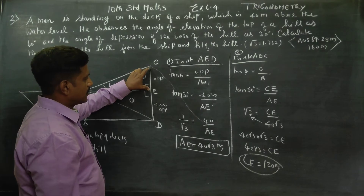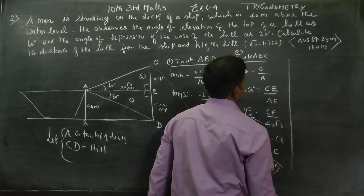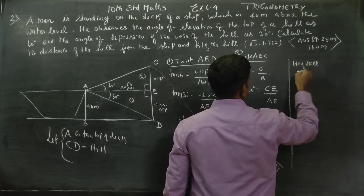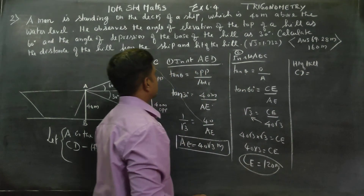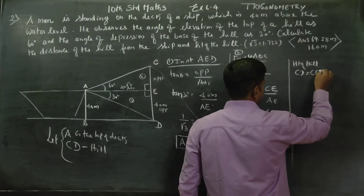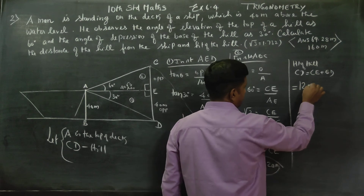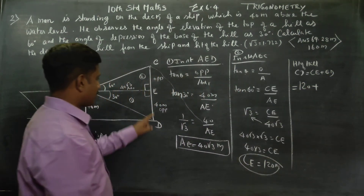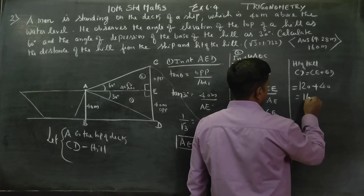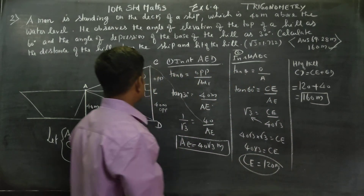Now from CE we can find the distance along the hill. The height of the hill is CD, and CD equals CE plus ED. CE we just found is 120, and ED from the diagram is 40. Adding them, your answer will be 160 meters. Height of the hill is 160 meters.